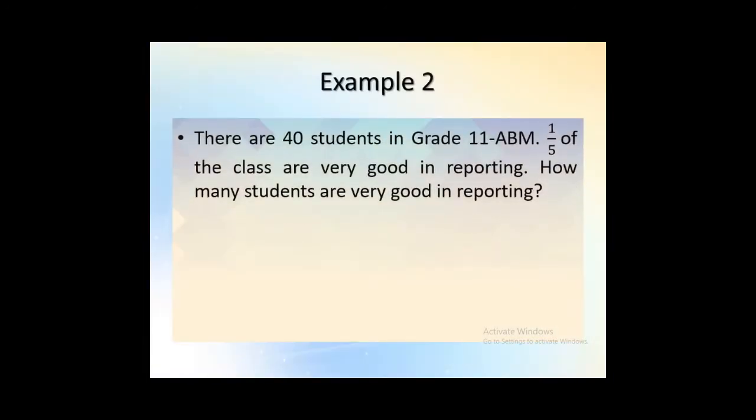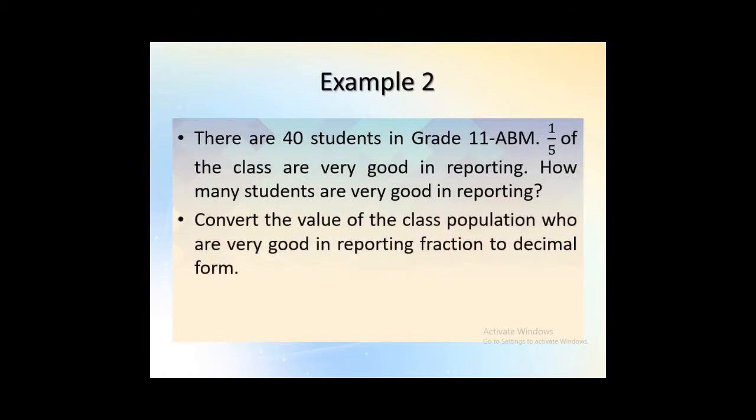Example 2: There are 40 students in grade 11 ABM. One-fifth of the class are very good in reporting. How many students are very good in reporting? First, convert the value of the class population who are very good in reporting, fraction, to decimal form. So 1 divided by 5 equals 0.2.